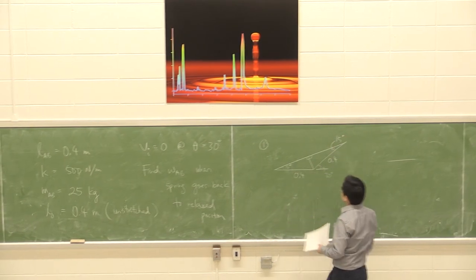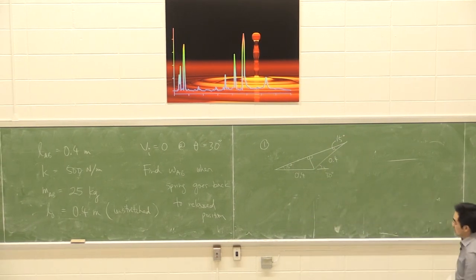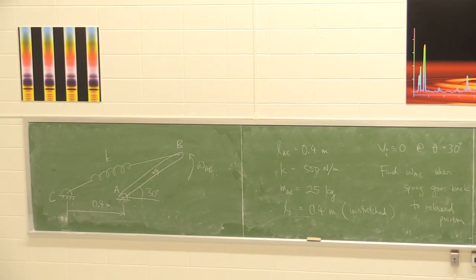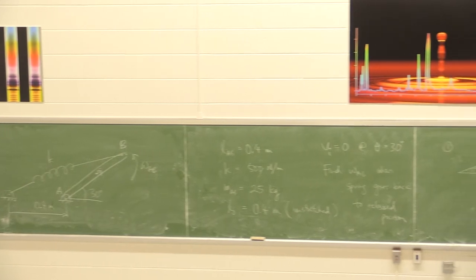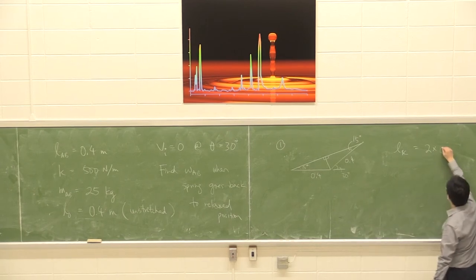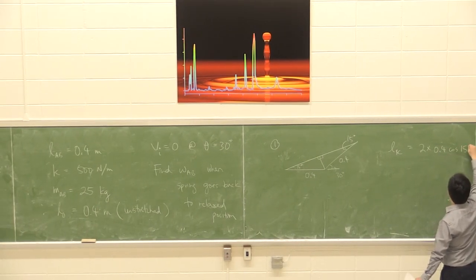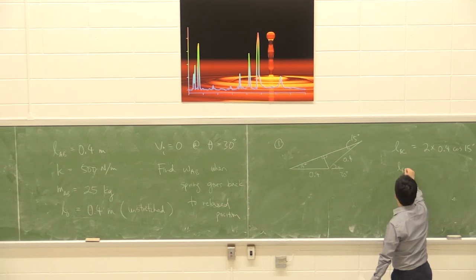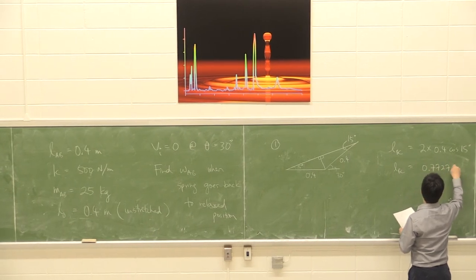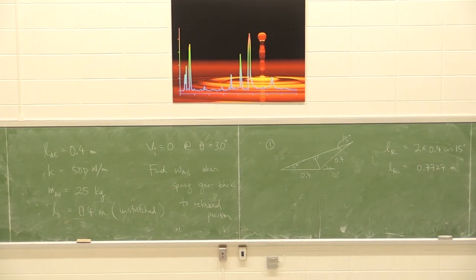15, and this over here is also 15. So that geometry right there allows you to figure out the current stretch of the spring. Imagine that this is now going to be our LBC. And our LBC, the whole length of the spring, is going to be one of these legs times 2. So it should be 2 times, basically, a cosine 15 of a 0.4. So 0.4 cosine 15. So that gives me the stretch length at position 1.